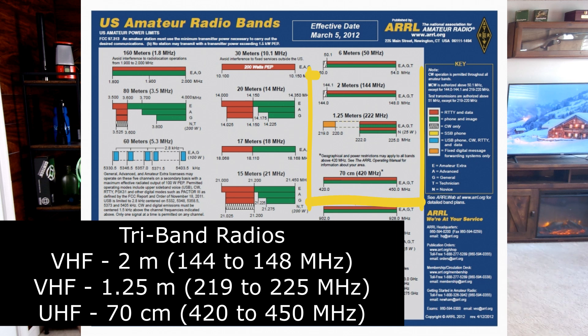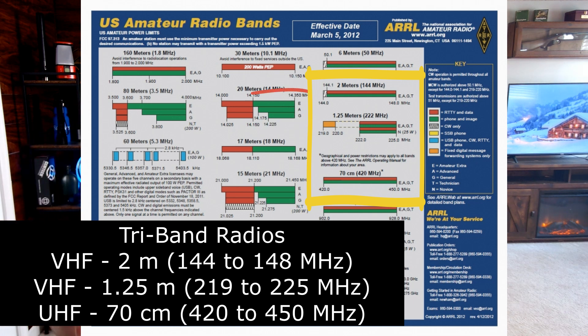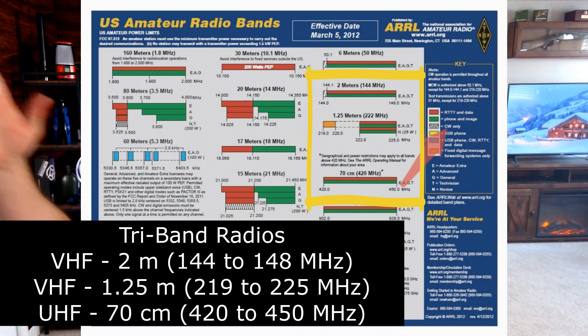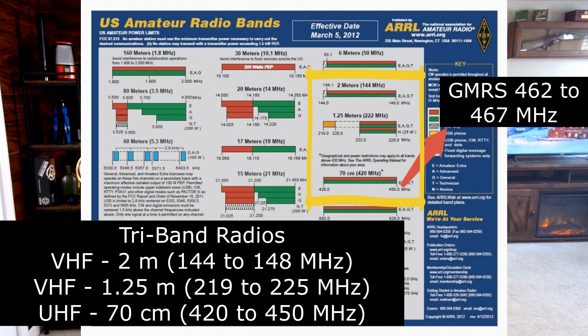Some fancier ham radios — not a UV5R, but Baofeng, Wouxun, and other brands — make a tri-band radio that operates on the 1.25-meter band as well as the 2-meter and 70-centimeter bands. Also with ham radio, you can tune all the way up into GMRS frequencies. Your ham radio is not fixed to the band chart — it can go outside of it, which can get you into trouble. If you stray off the band plan you can end up on business frequencies and emergency services, which can cause problems.